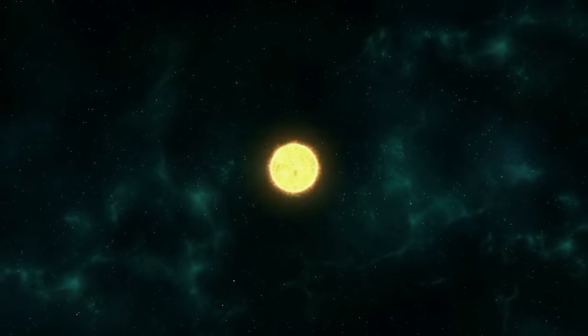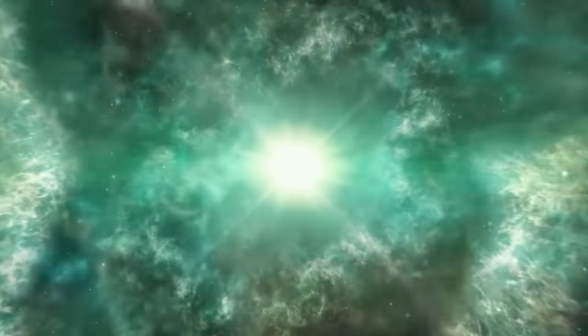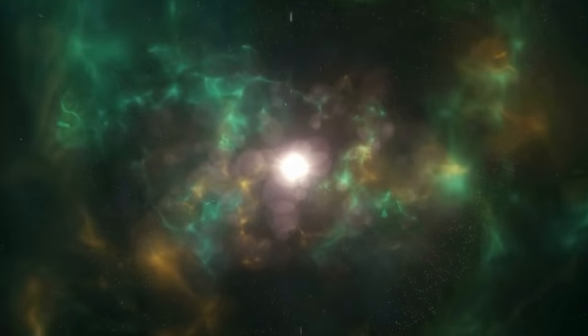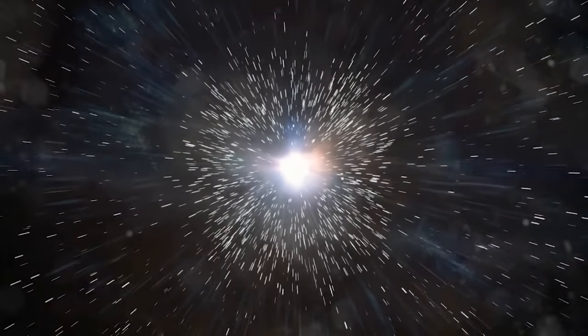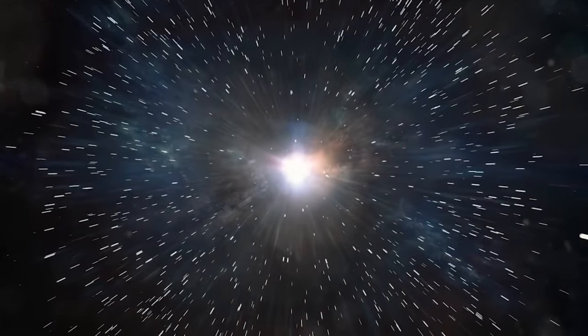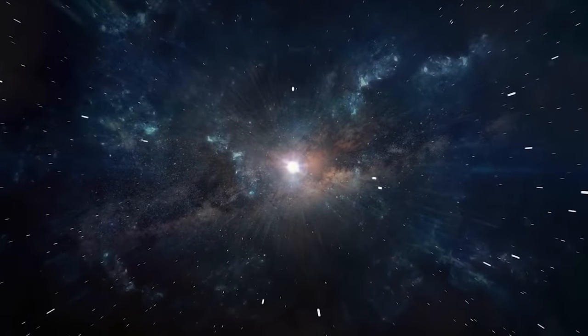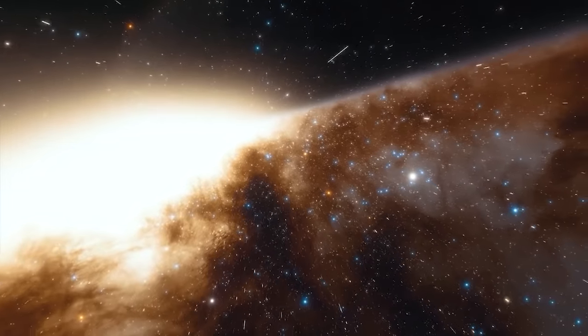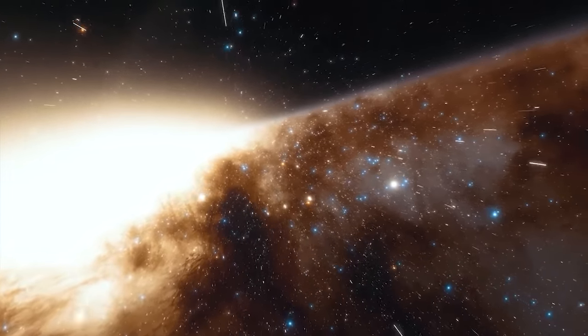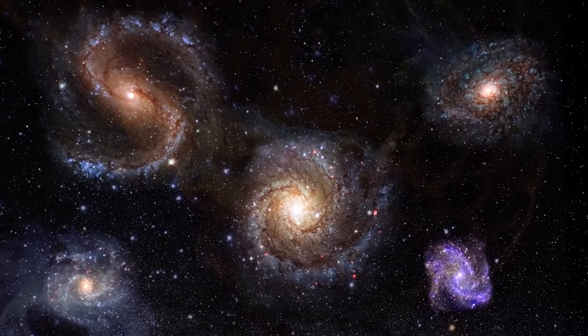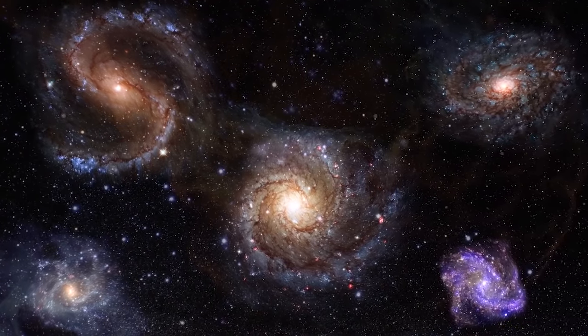The main energy source of a type 4 civilization would be supernovas. Supernovas are massive explosions caused during the final stage of a massive star's life. A supernova causes a concentrated and intense release of energy near the star. This would serve as an extremely efficient source of energy, as it would generate an amount of energy equivalent to the amount of energy stored and released by the star throughout its lifetime. A supernova occurs roughly once every 40 years in a single galaxy, so a type 4 civilization would travel throughout multiple galaxies to gather this energy.